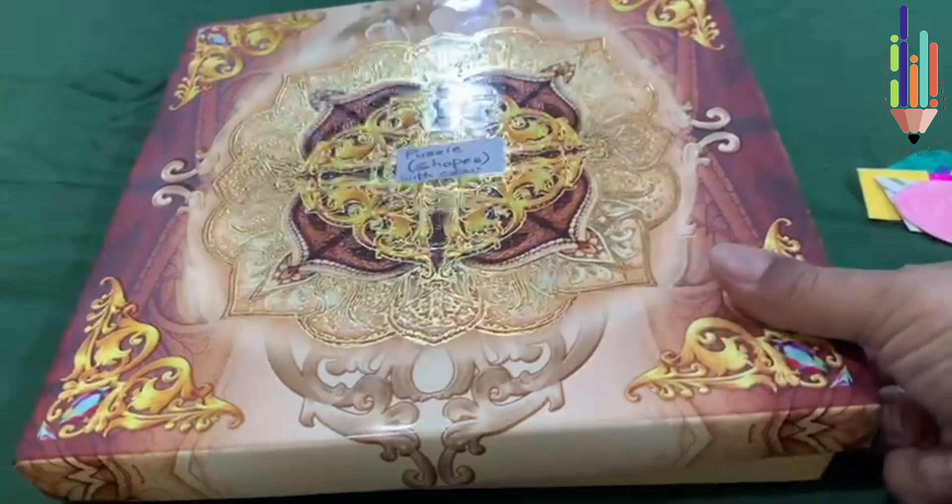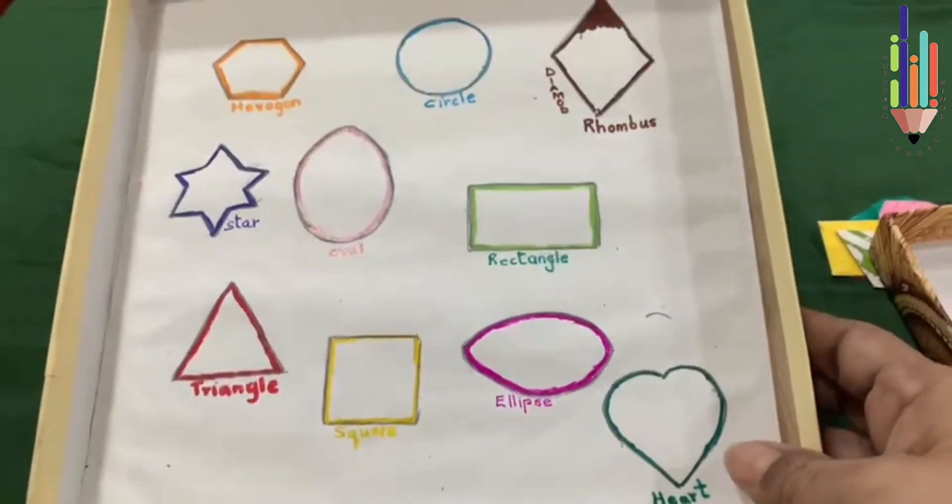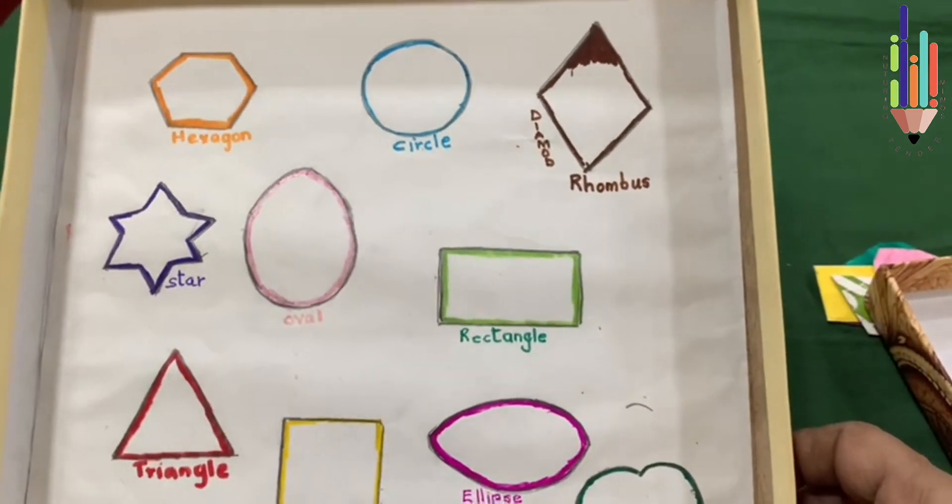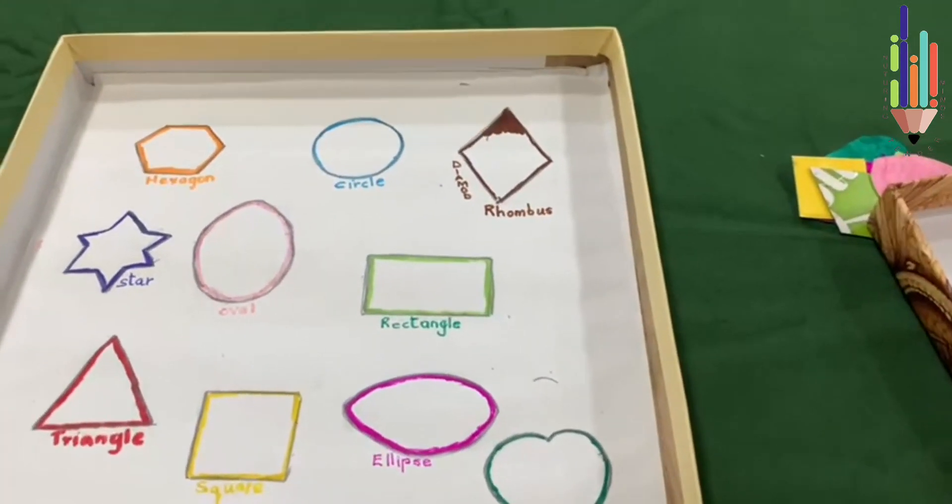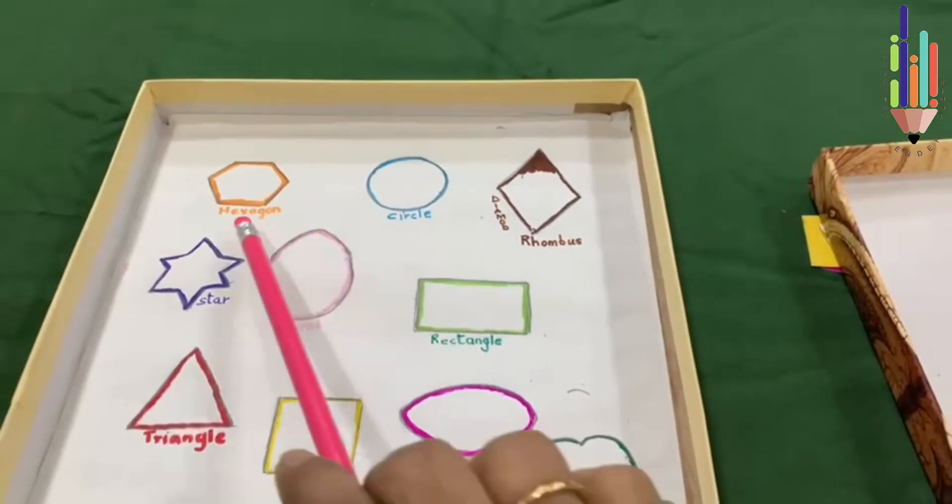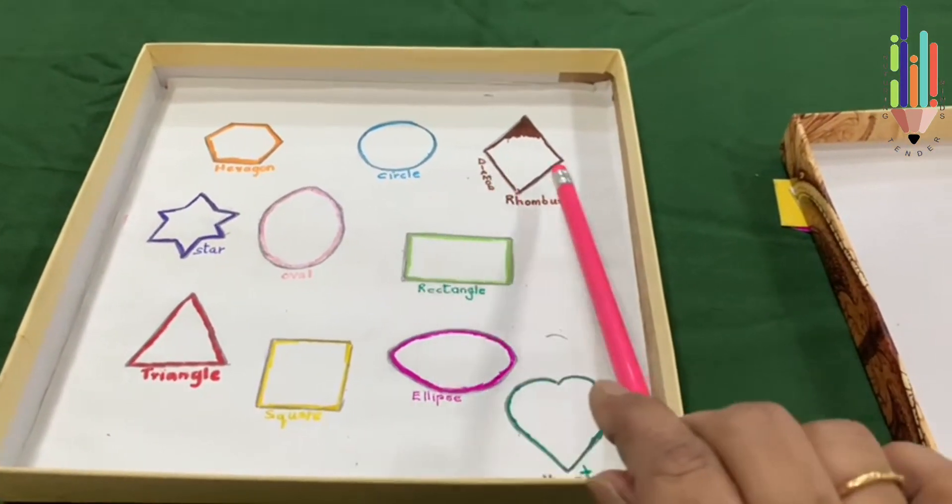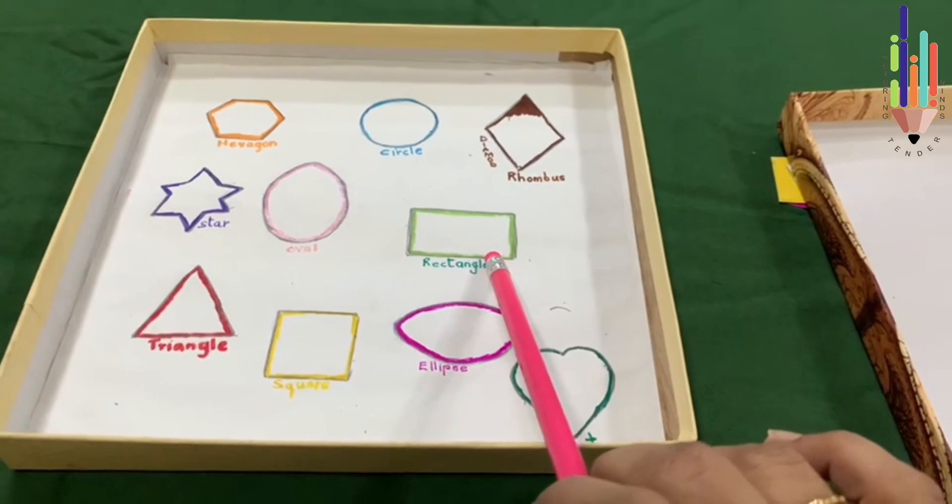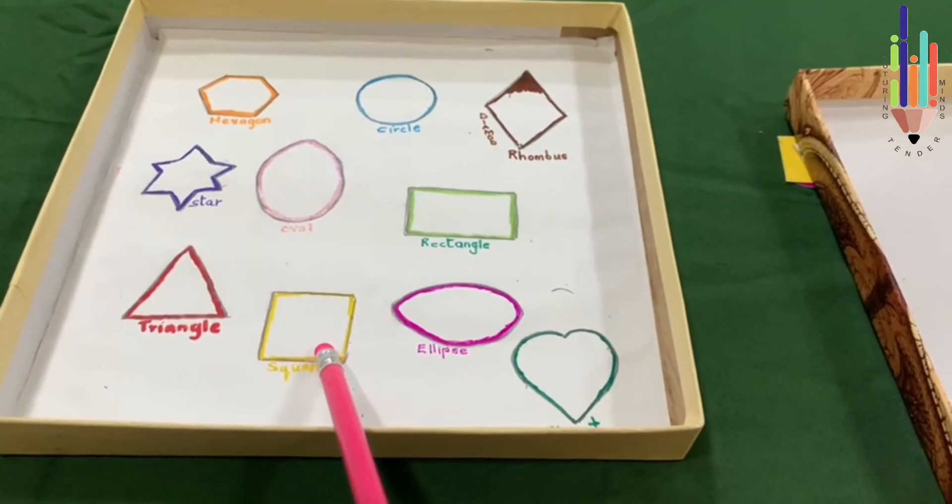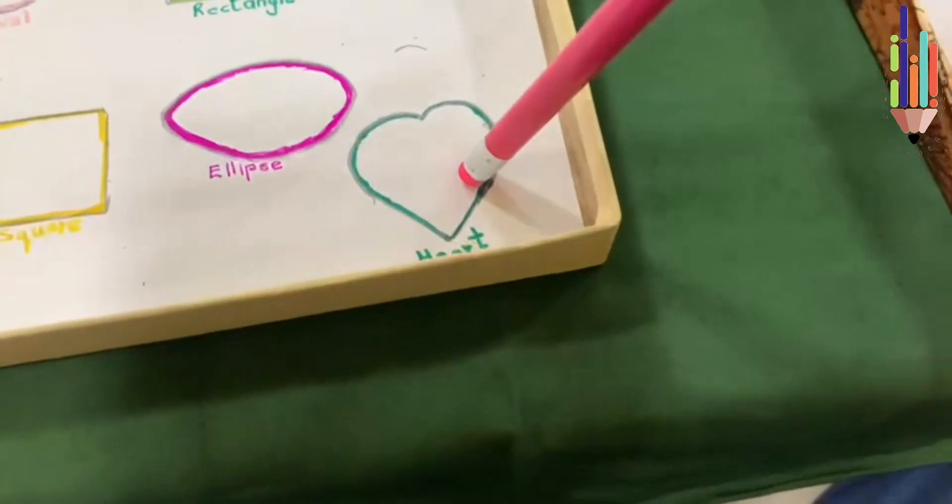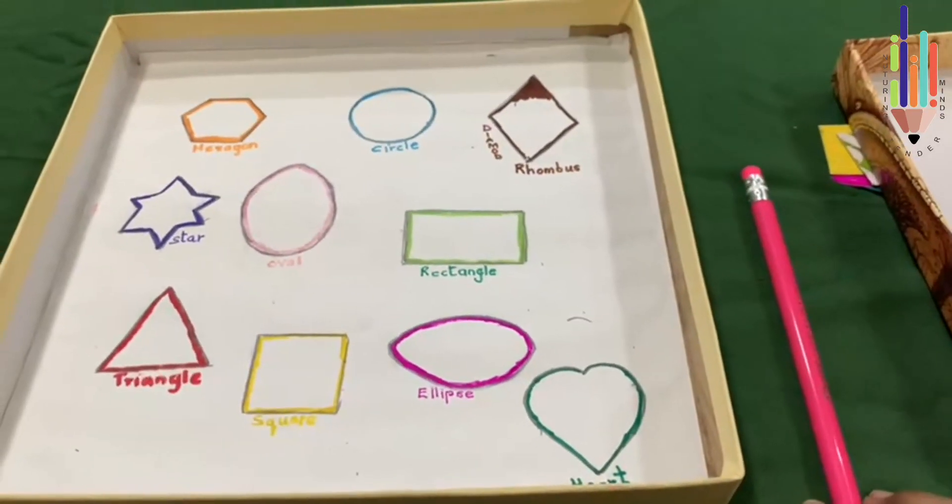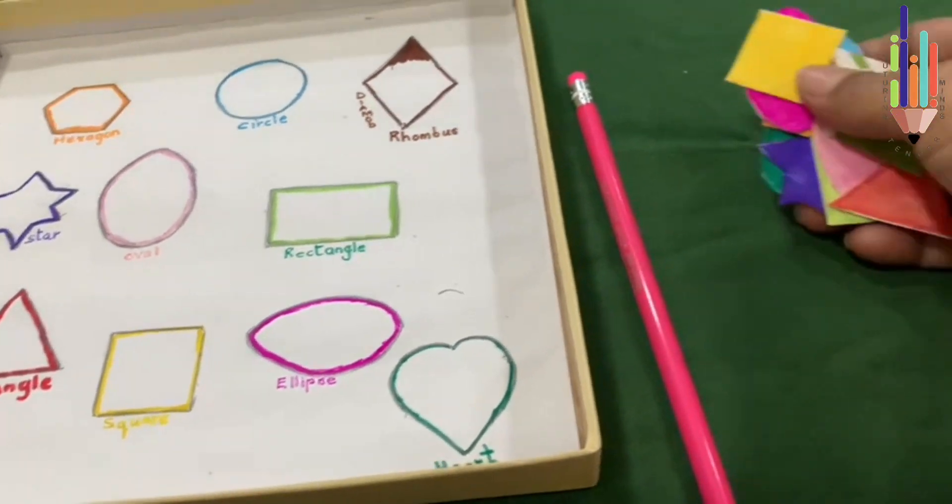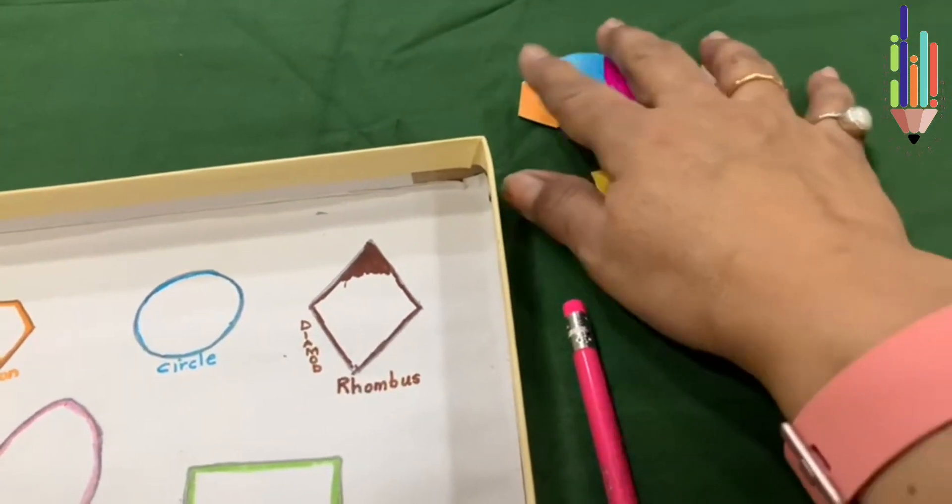Now here I open the box. What can you see in the box? I have made different shapes like the hexagon, circle, the diamond or the rhombus, the star, oval shape, rectangle, triangle, square, ellipse, and your heart shape.